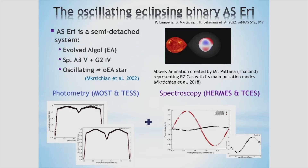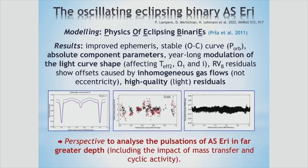I combined space photometry — two light curves: one in 2013 obtained by the MOST satellite (Microvariability and Oscillations of Stars), and the other light curve by TESS, the Transiting Exoplanet Survey Satellite. I combined that with high resolution, high quality radial velocities obtained with two Echelle spectrographs: HERMES at the Mercator telescope and CCAS at Dautenburg in Germany.